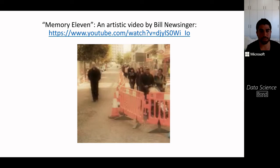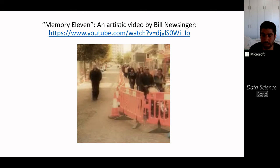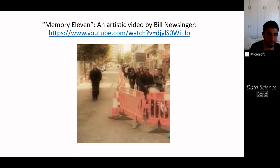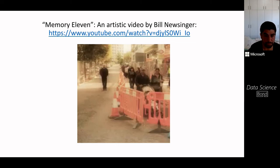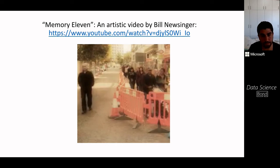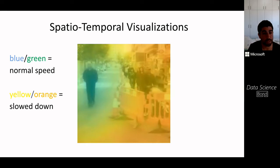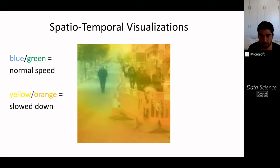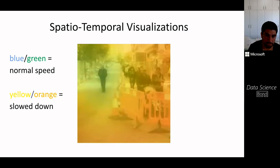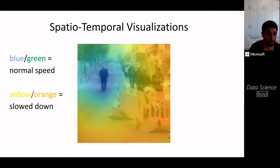An artistic YouTube video by an artist named Bill Nussinger was made by stitching together spatial-temporal regions taken at normal speed and some at slow motion. We can use SpeedNet to detect speediness not only in time but in both space and time, visualized using class activation maps: blue/green regions are normal speed, and yellow/orange regions are slow-motion. SpeedNet successfully detects spatial-temporal regions of slow motion and normal speed.